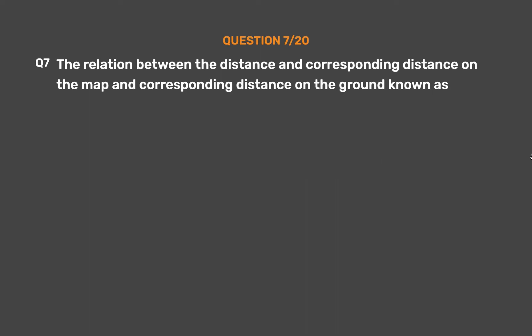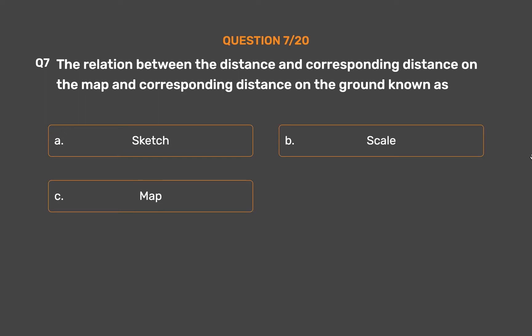Question number 7. The relation between the distance on the map and the corresponding distance on the ground is known as — Option A: Sketch. Option B: Scale. Option C: Map. Option D: Globe.